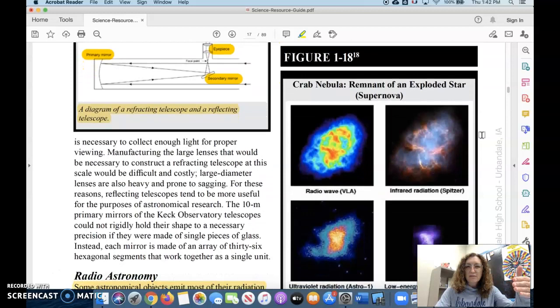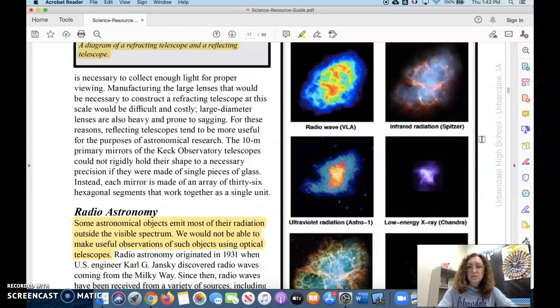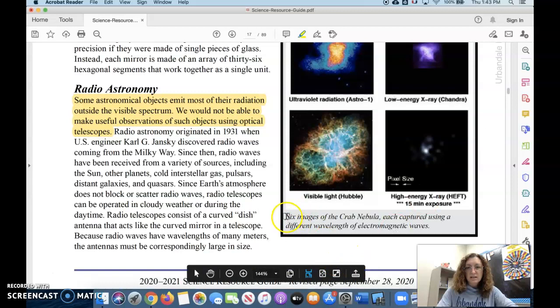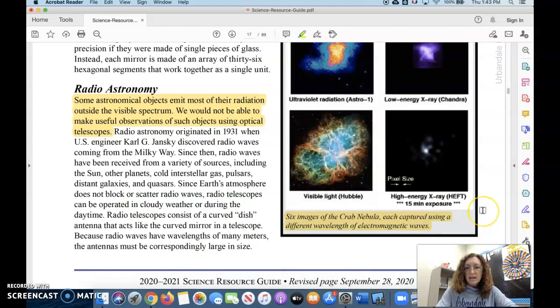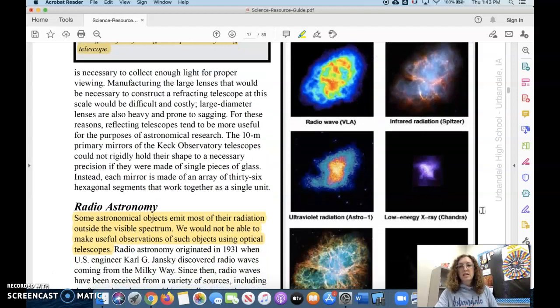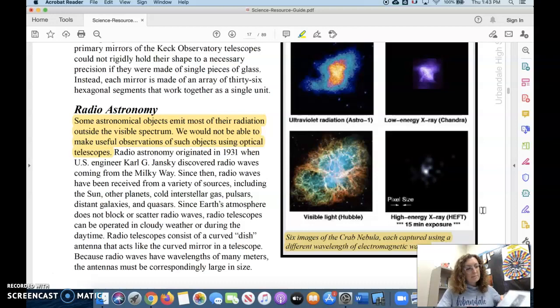That can then be translated into images like figure 1-18. This is the kind of work that my niece is doing for her research. She's down in Florida at Florida Institute of Technology studying astronomy. She's going to be an astrophysicist when she graduates. And you can see all of these different images of the Crab Nebula created using data. These are false images, but they help us understand what we're seeing.